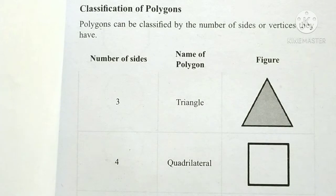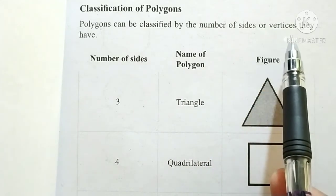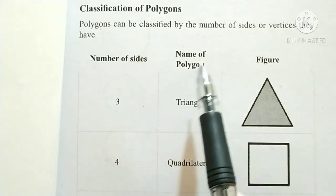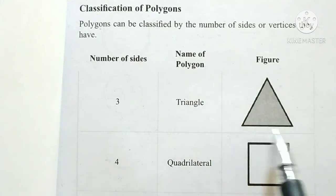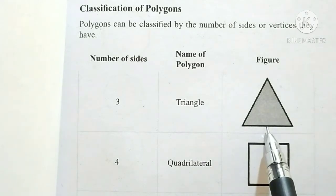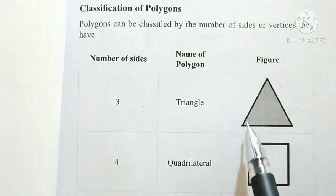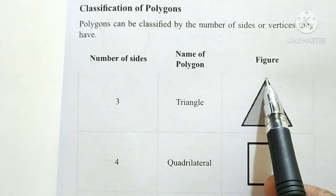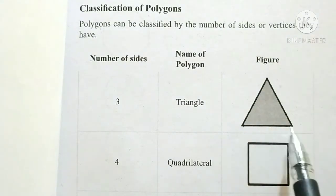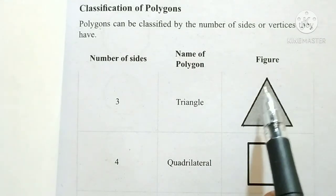Classification of polygons: polygons can be classified by the number of sides or vertices. With 3 sides, the polygon is called a triangle. The point where two lines join is called a vertex; the plural is vertices. A triangle has 3 sides and 3 vertices.